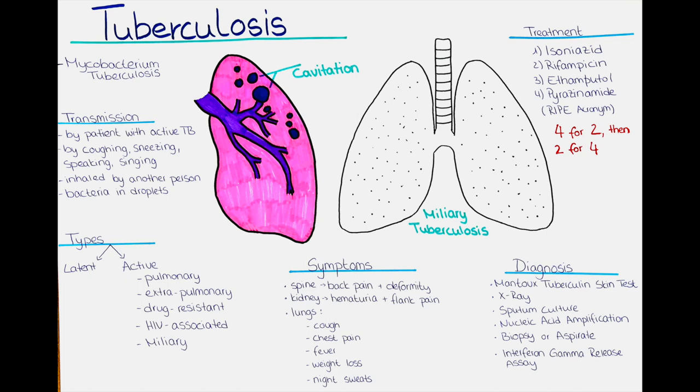night sweats, and cough. However, because the tubercles in miliary tuberculosis are so small and numerous, the symptoms may be more severe and rapidly progressive than those of other types of tuberculosis. Complications can include respiratory failure, sepsis, and death. Early detection and treatment are essential in preventing severe complications and reducing the mortality rate.